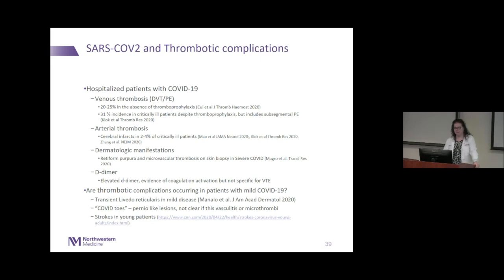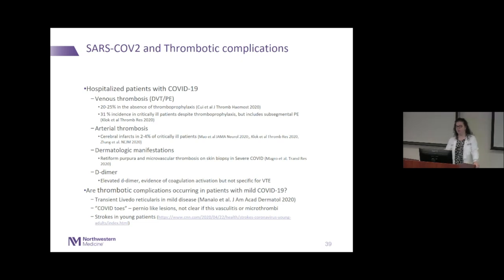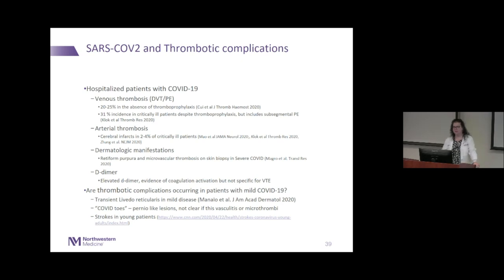This phenomenon raises the question of whether we need to intervene. In just the last week there have been more reports, including in the lay press, about thrombotic complications in patients with mild disease — including case reports of livedo reticularis with COVID. It's not clear if this is vasculitis or manifestation of microthrombi. Strokes in young patients are being reported in the lay press before the medical press — this is a feature of practicing in this 21st century epidemic. The true prevalence of these complications is not well understood.